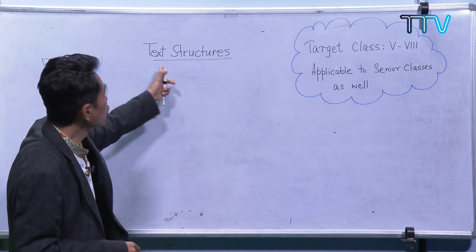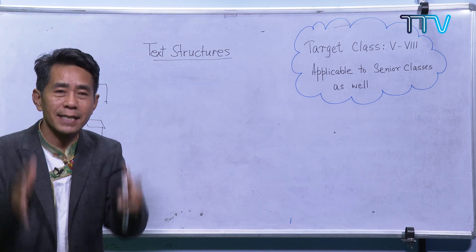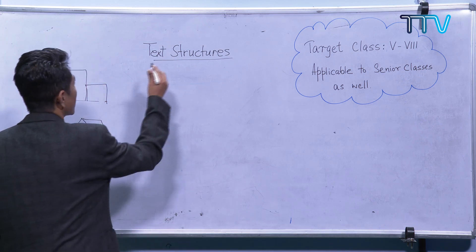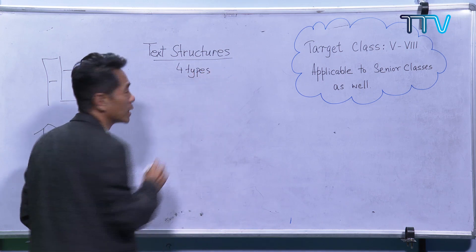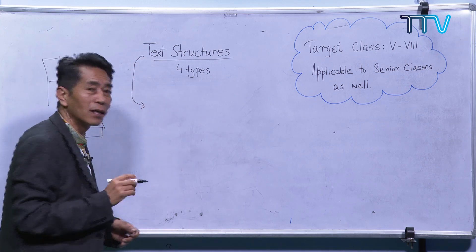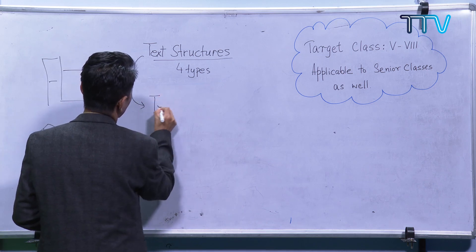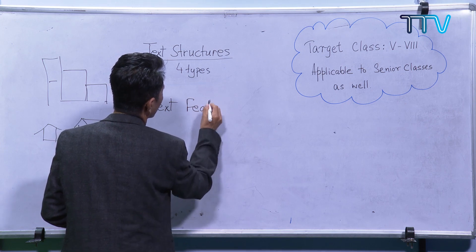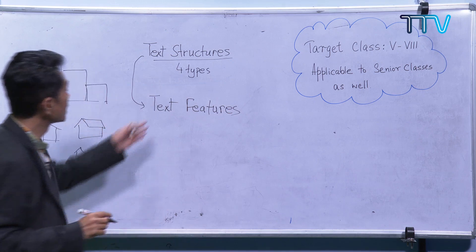Now when I talk about text structure, I'm talking about how things in a text are organized. The writer organized things in four different types — we have already done this. And now, another very important thing you need to know today is text features.